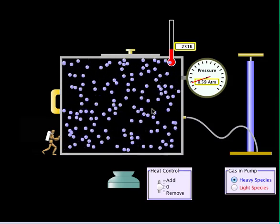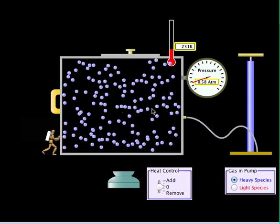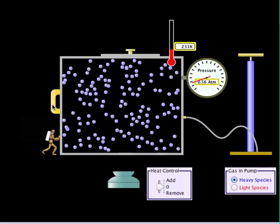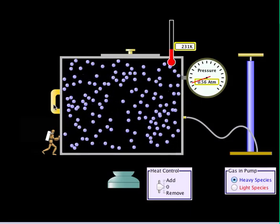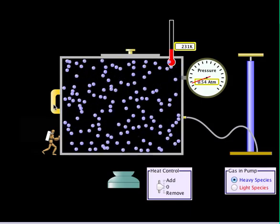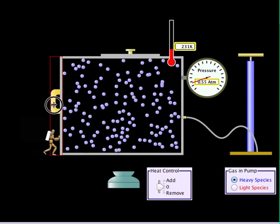The first law of thermodynamics talks about changes to energy to a system. And for gases, the two ways that we can add energy to the system is by doing work to the system.